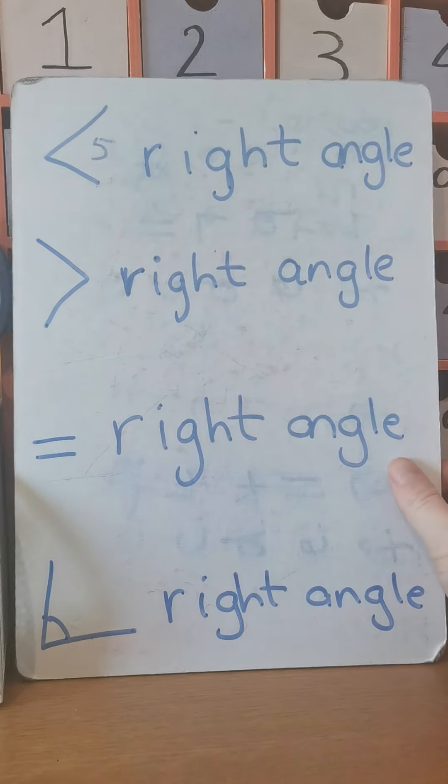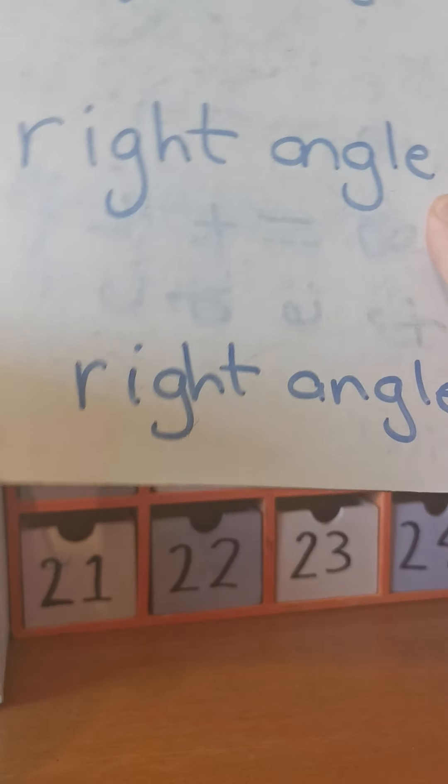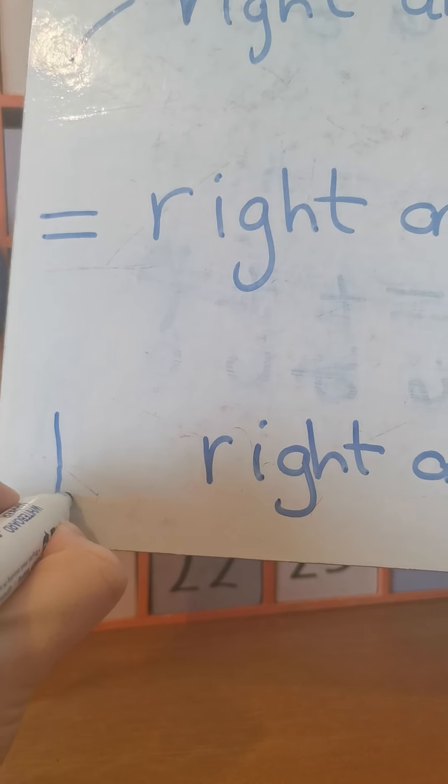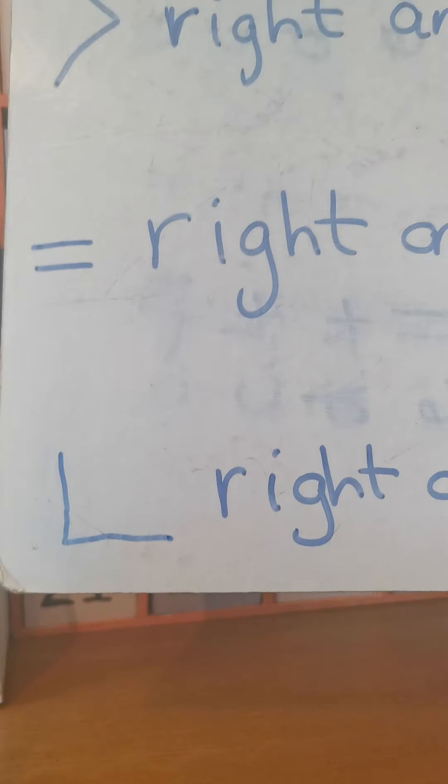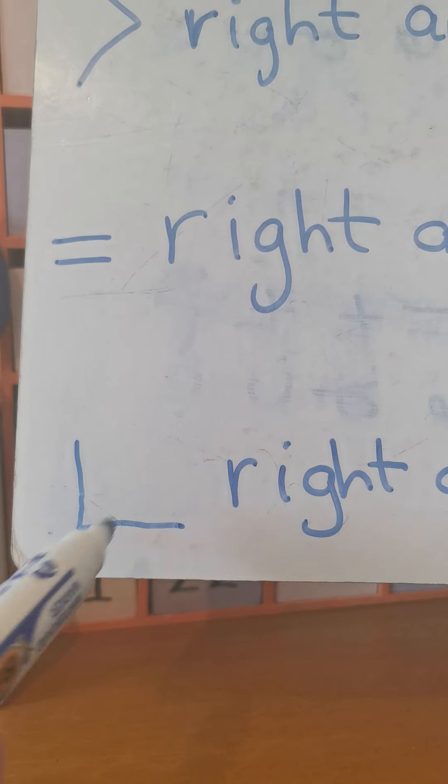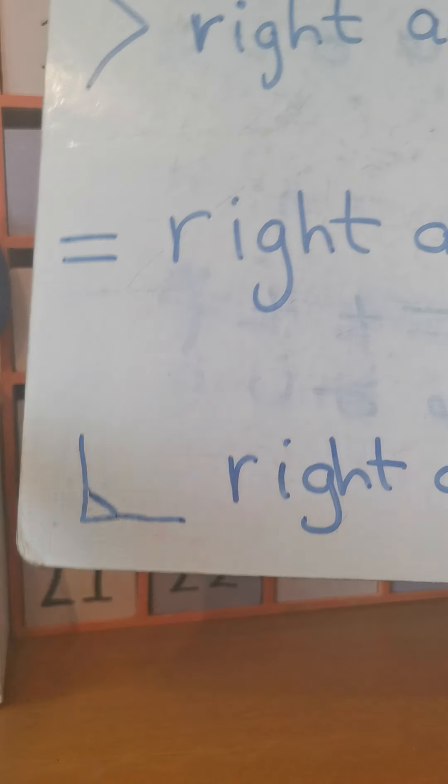And in this they're always talking about a right angle. So a right angle is always two straight lines like that. Straight line at the bottom and a straight line going up. And this in here is the right angle.